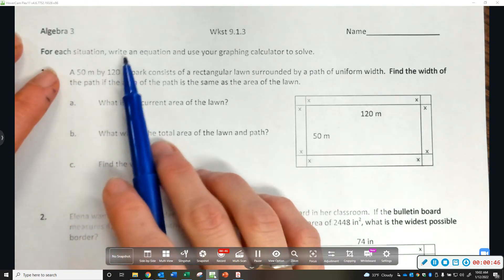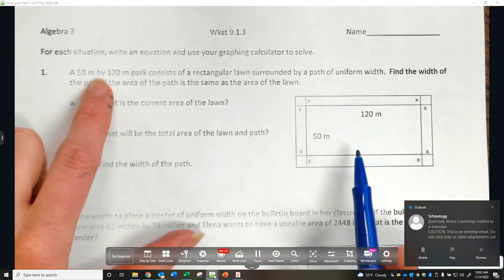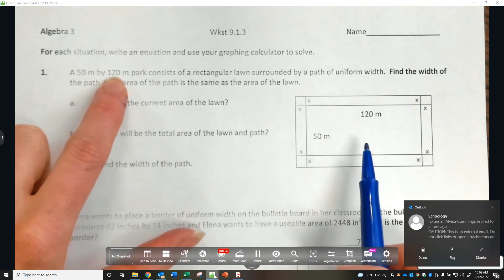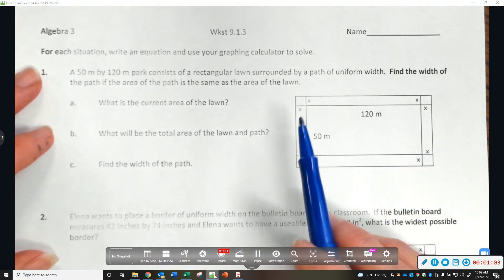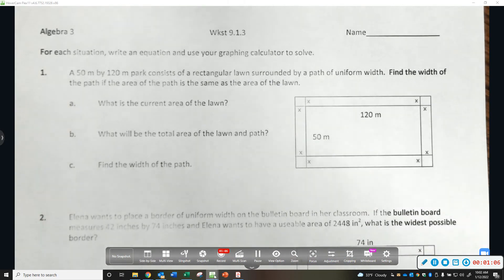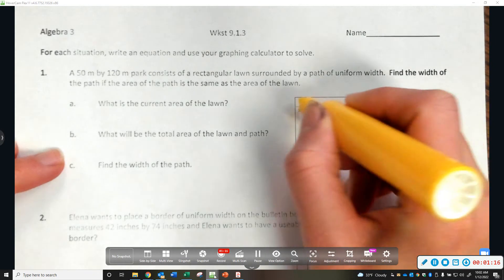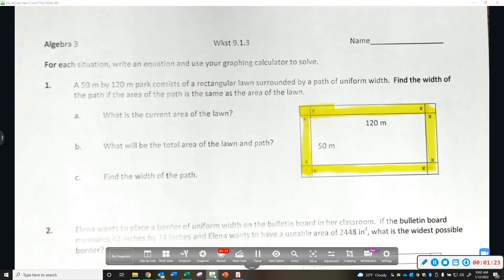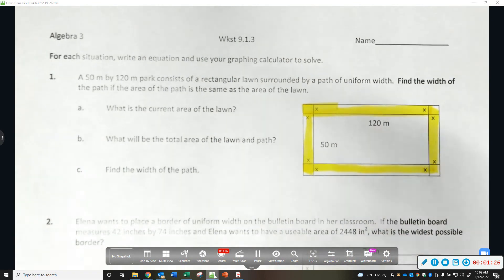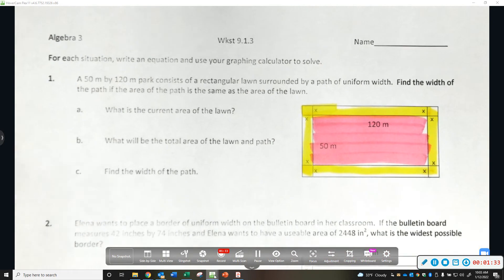For each situation, write an equation and use your graphing calculator to solve. So I have a picture here. It says a 50 by 120 meter park consists of a rectangular lawn surrounded by a path of uniform width. Find the width of the path if the area of the path is the same as the area of the lawn. So that means the area of the path is the same as the area of the pink.